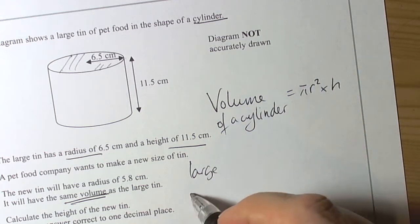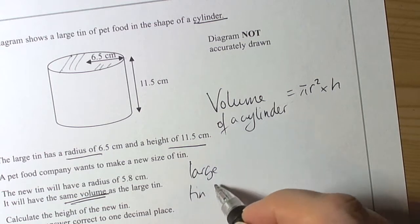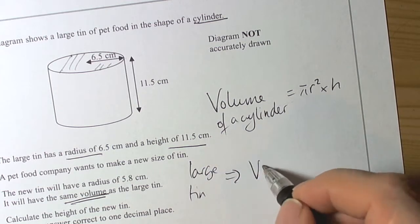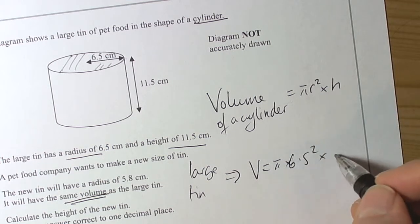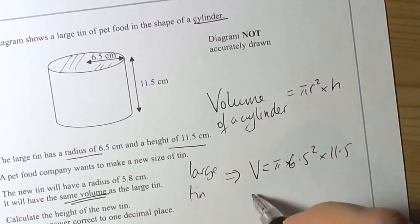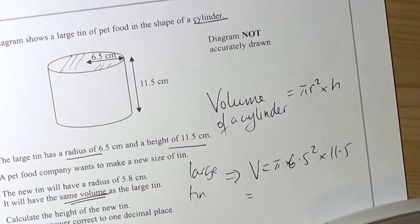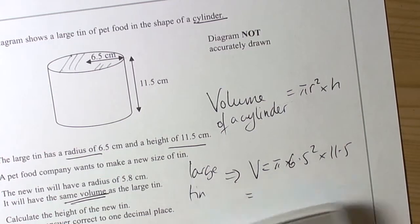So the large tin, the volume is going to be equal to π times 6.5 squared times 11.5. So 6.5 squared times π equals... And again, as always, write the full answer down because it's not our final answer.